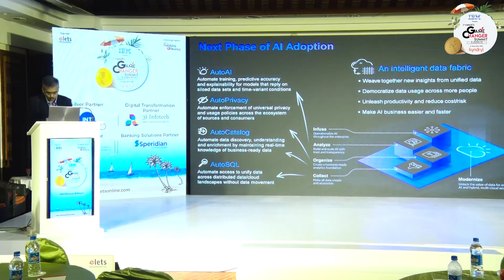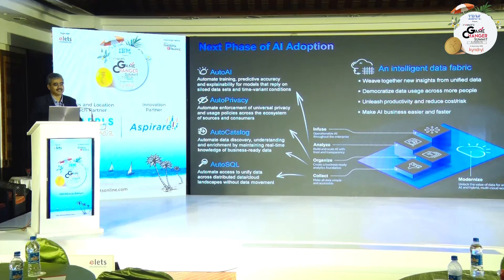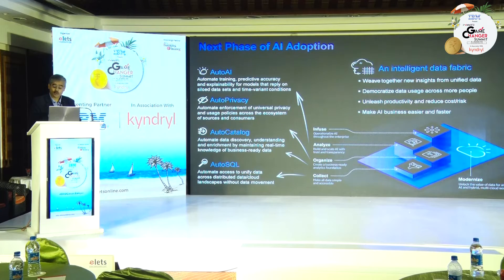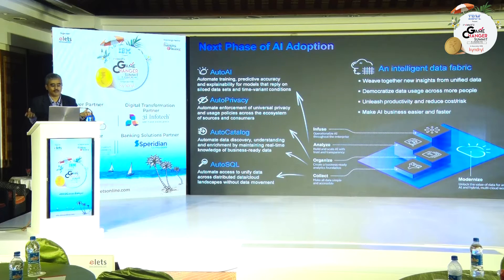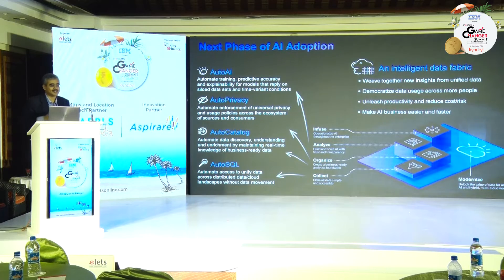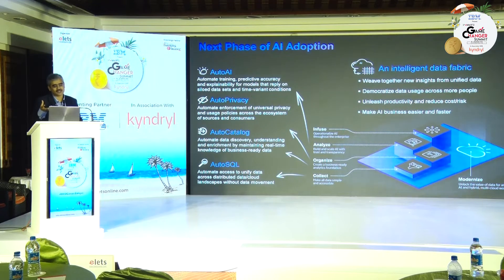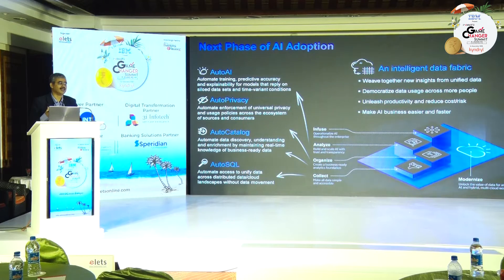Let me come to what we're looking at from a next phase of adoption. One of the core elements we've been seeing is democratization of data — lowering the center of gravity on how more and more people within the organization can consume data. With an FMCG giant — ITC — one of the biggest challenges they faced was the skill gap. While they have very few data scientists on board, the ability to consume data down the chain becomes difficult. The approach we've started taking is an auto-AI approach.